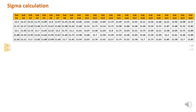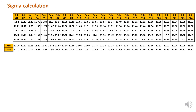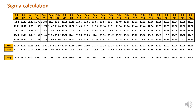For the range method, we need the range value. For that we need to calculate the maximum and minimum value for each individual subgroup. From that we can calculate the range as maximum minus minimum. Once the range value for each subgroup is available, we can calculate R-bar by taking the average of all the individual range values.